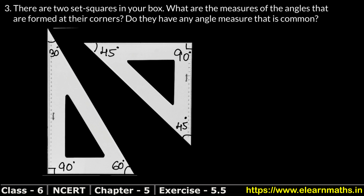Now what was the question saying? It was saying: what are the measures of the angles formed at their corners? We have measured the angles at all the corners. Do they have any angle measure that is common? In the first set square, this is 90 degrees, and in the second set square, this is also 90 degrees.